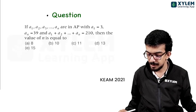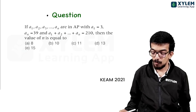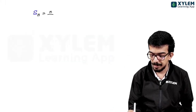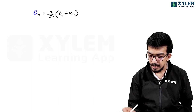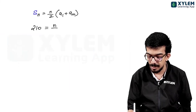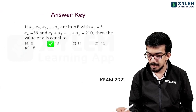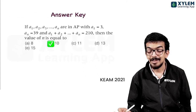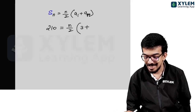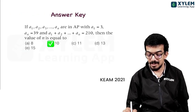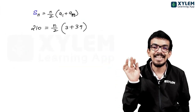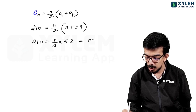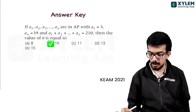Next: A1, A2 up to AN are in AP with A1 equal to 3, AN equal to 39, and sum of A1 up to AN is 210. Find the value of N. Using the formula SN = N/2 × (A1 + AN): 210 = N/2 × (3 + 39) = N/2 × 42 = 21N. So N equals 10. Simple question.